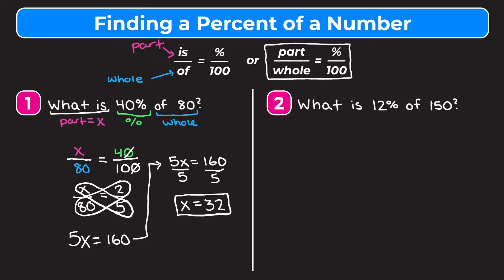Let's take a look at example two: what is 12% of 150? We need to figure out what each part of our question represents in our proportion. 'What is' is what we're solving for, so this is our part and it's going to be our variable. 12% is our percent, and 'of 150' is the whole.